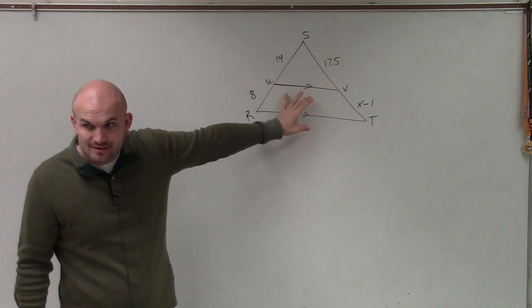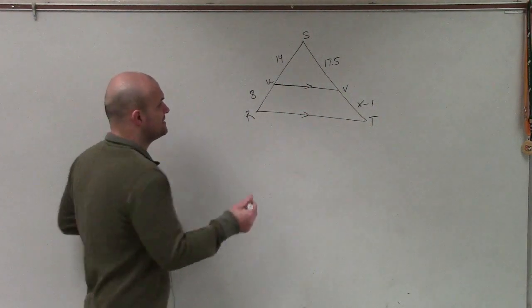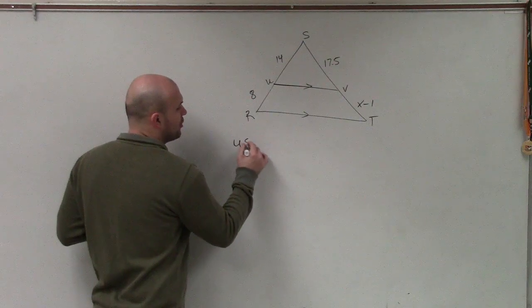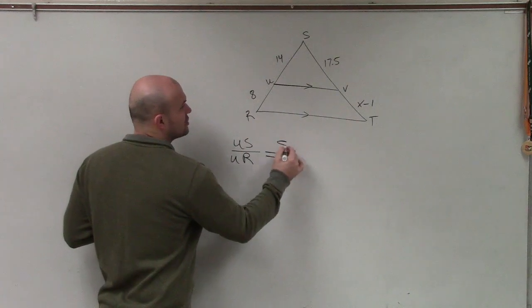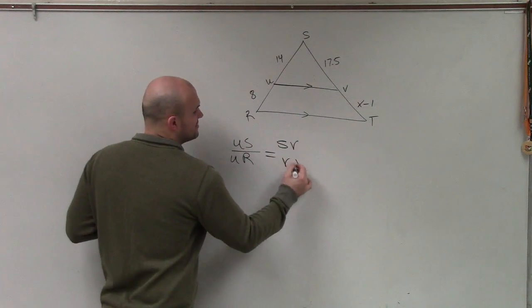When we had parallel lines, we said that the proportion of us over ur is equal to the proportion of sv to vt.